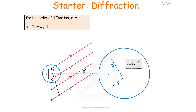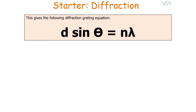For the first order of diffraction (N=1), sin theta₁ equals lambda over D. For the second order (N=2), sin theta equals 2 lambda over D, because there are two whole wavelengths between the waves. Taking it to the nth order, sin theta equals N lambda over D. This gives us the diffraction grating equation: D sin theta equals N lambda, where D is the distance between slits in metres, theta is the angle to the normal made by the maximum, N is the order of diffraction, and lambda is the wavelength.